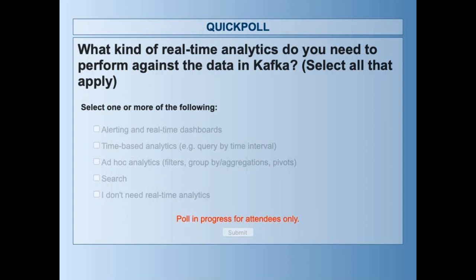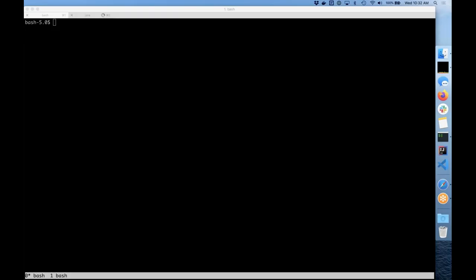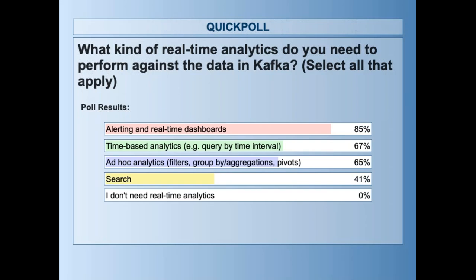Now that we've talked about Druid and Kafka, what kinds of analytics are you thinking about doing on the data coming through Kafka? Are you trying to do alerting and monitoring or real-time dashboards? Time-based analysis? Ad hoc slicing and dicing? Search? Or you don't need analytics, just building apps? It's not surprisingly a pretty big mix of all four types. A lot of alerting and dashboards — that's the most common, which we see a lot in operations. A lot of time-based analytics. Good slicing, dicing, and search — 40% are doing search.